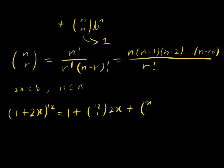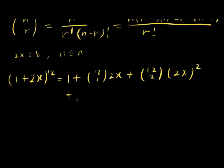Plus 12 choose 2 times 2x to the power of 2. And then the summation continues up to the power of interest, which is 12 choose 7, and 2x to the power of 7.